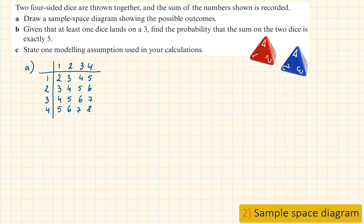Part B. Given that at least one dice lands on a 3, find the probability that the sum of the two dice is exactly 5. There are 7 possibilities that the dice lands on a 3. So the denominator of this probability is 7. And out of these 7 possibilities that we have highlighted in yellow, there are only 2 with a sum of 5. So the probability is 2 out of 7.